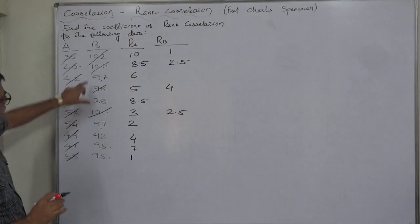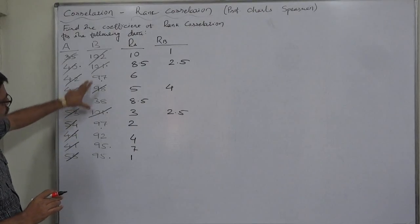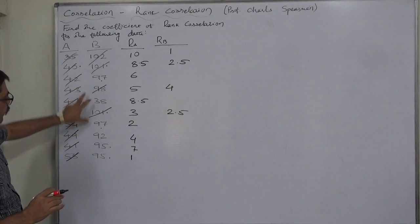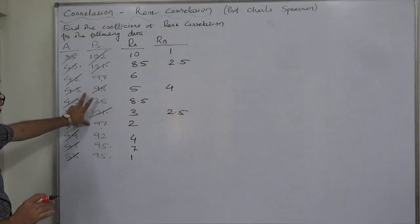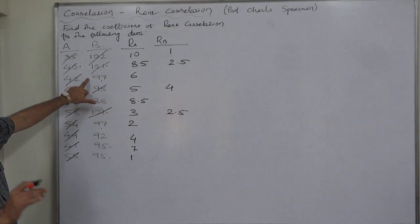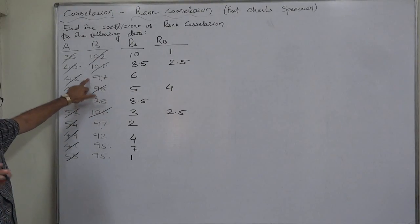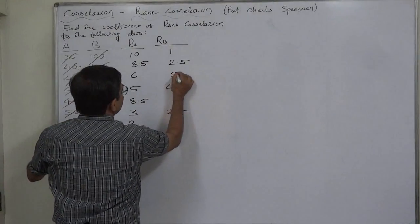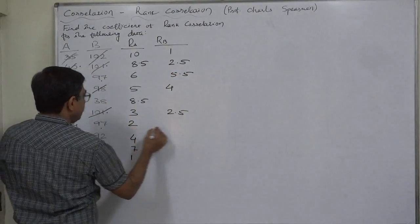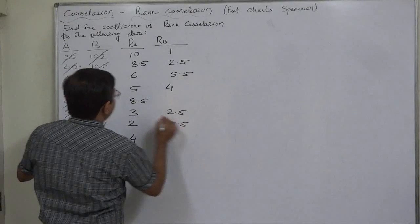Now, 97. 5 and 6 are the two consecutive ranks available for 97 at two different places but we cannot assign 5 and 6. So we have to take mean 5 plus 6 divided by 2, 5.5, 5.5 and 5.5.